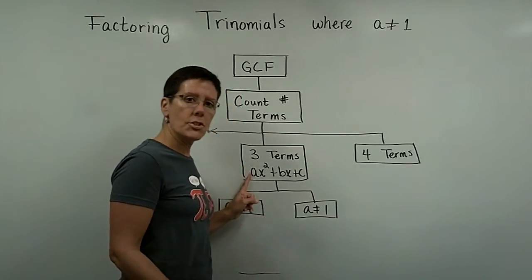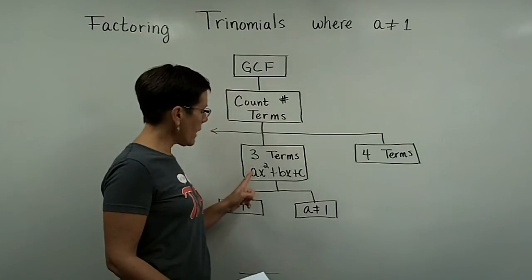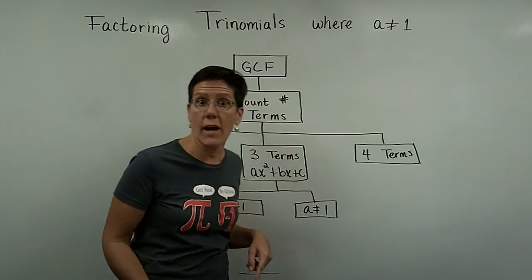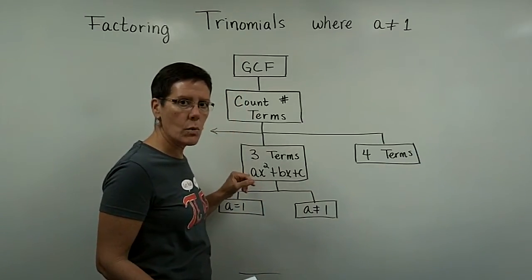In other words, maybe you have 2x squared plus 3x minus 7, or maybe you have 12x squared plus 3x minus 5. So this number right here is not going to equal 1.